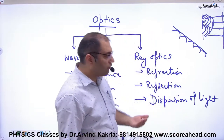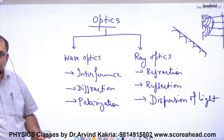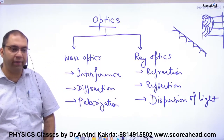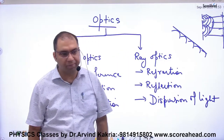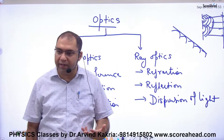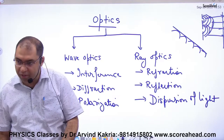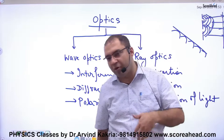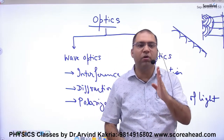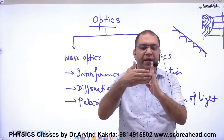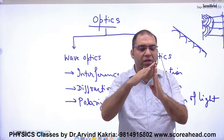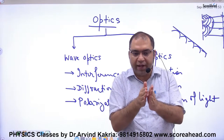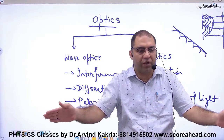So wave optics began. The first chapter in wave optics is interference, where we study Young's experiment and confirm the wave nature of light. The second chapter is diffraction — the bending of light across the corner of an obstacle. A ray traveling in a straight line would simply end at an obstacle, but a wave can bend around it slightly and continue.